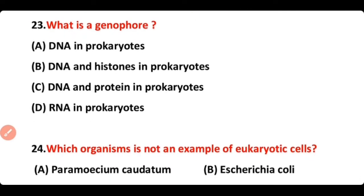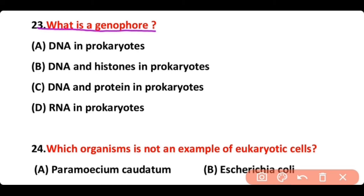Question number 23. What is a genophore? Options: DNA in prokaryotes; DNA and histones in prokaryotes; DNA and protein in prokaryotes; or RNA in prokaryotes. The correct answer is option A — a genophore is DNA in the case of prokaryotes.